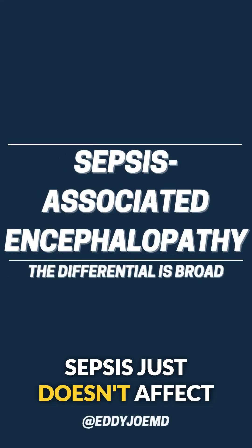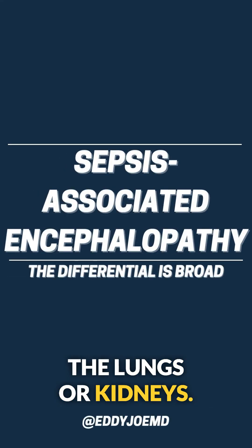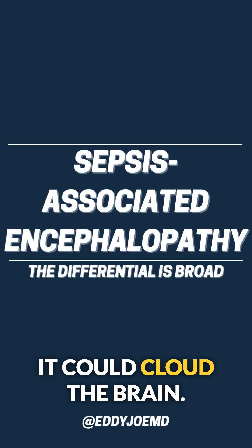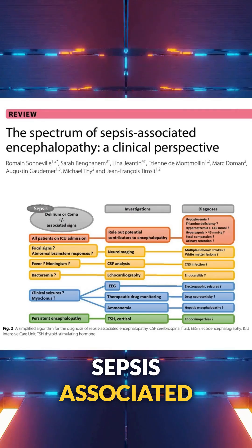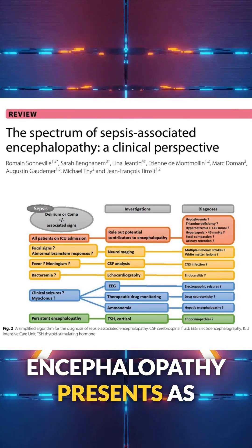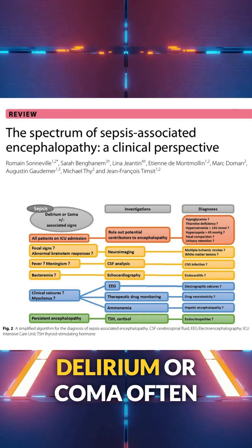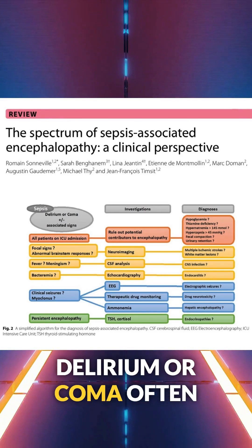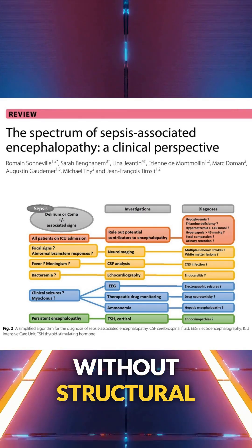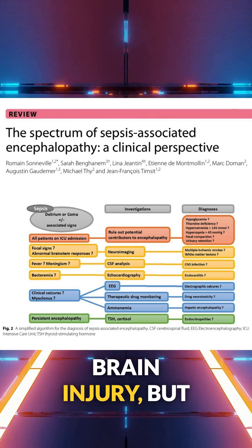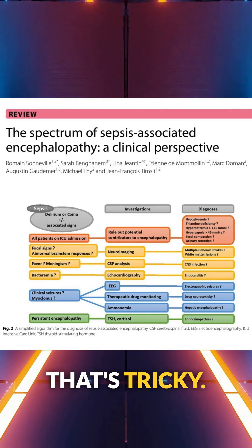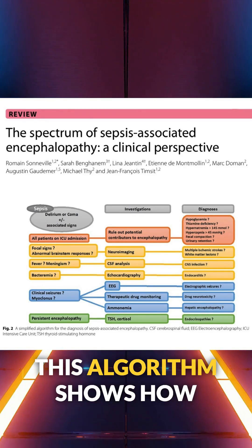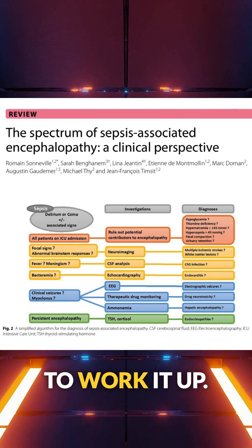Sepsis doesn't just affect the lungs or kidneys — it could cloud the brain. Sepsis-associated encephalopathy presents as delirium or coma, often without structural brain injury. But diagnosing it? That's tricky. This algorithm shows how to work it up.